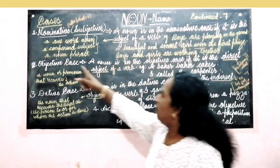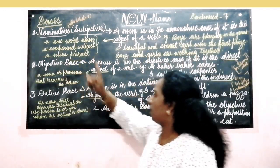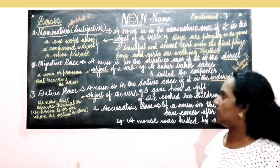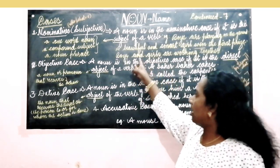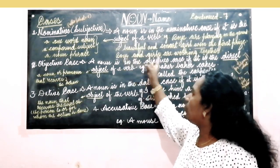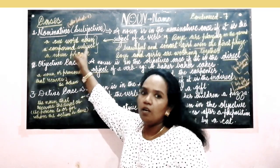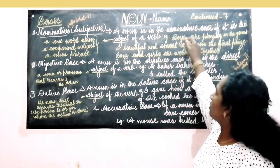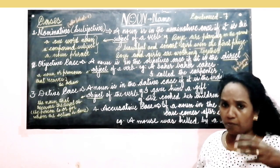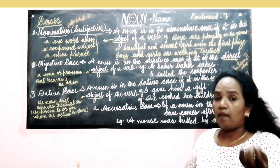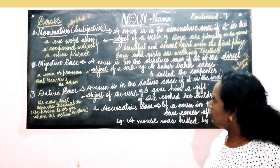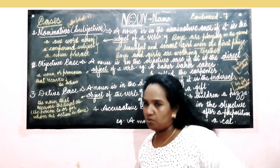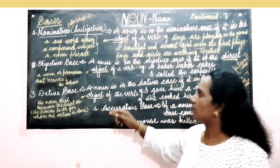A beautiful and smart girl is a noun phrase where girl is the head word. Next example: Boys and girls are working together. Boys and girls — and connects boys and girls — so it is called a compound subject. A compound subject means the subject can be a noun or a pronoun; it can be a single word, a noun phrase, or more than one noun.